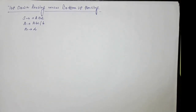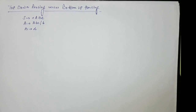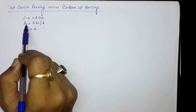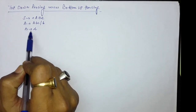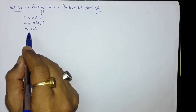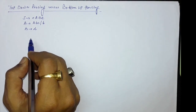Hello everyone. In this lecture we will discuss top-down parsing versus bottom-up parsing — what happens in each case. We have taken a grammar: S produces small a, capital A, capital B, small e; A produces capital A, small b, small c; A produces small b; and B produces D. Now we are going to see what actually happens in top-down parsing.